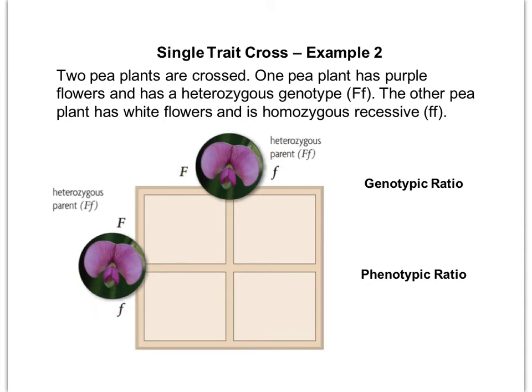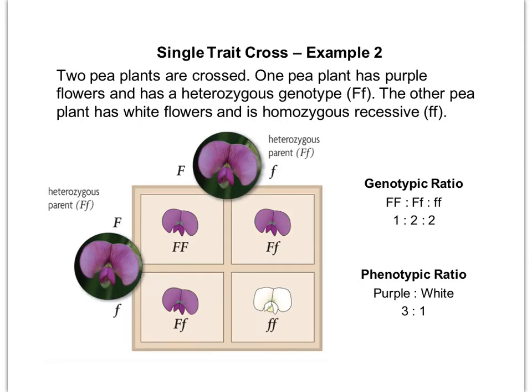We're going to cross these together, and here are our outcomes. Looking at the genotypic ratio, this time we have three different genotypes in the offspring: we've got homozygous dominant, two heterozygous, and then one homozygous recessive, for a one to two to one ratio.